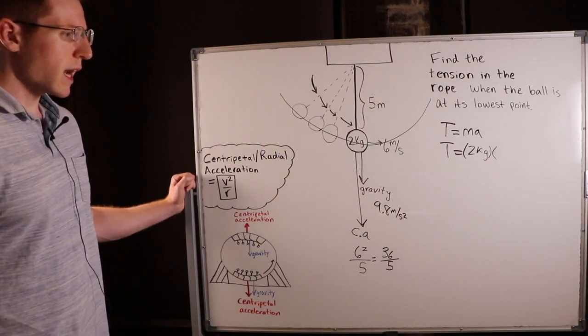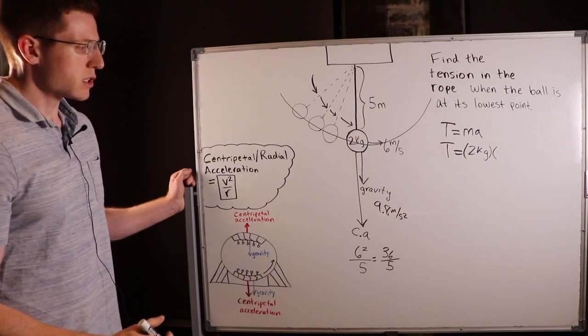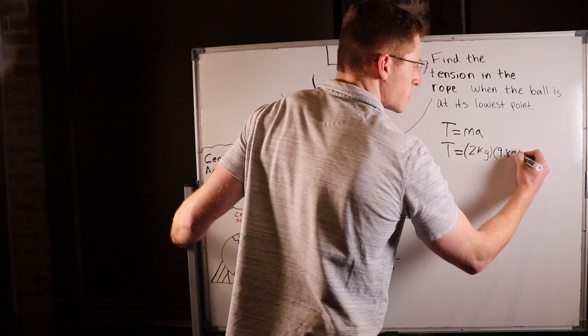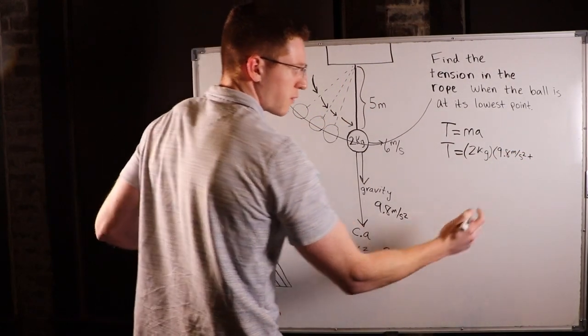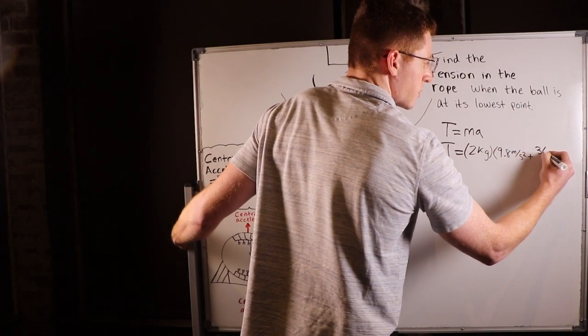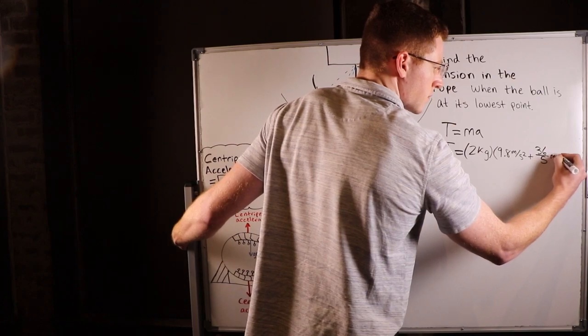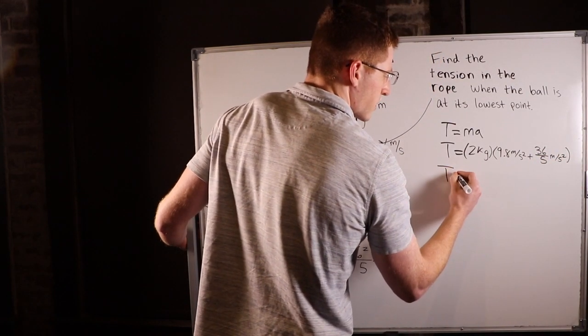So now we can add those in to our acceleration variable here. So I'll add together 9.8 meters per second squared plus 36 over 5 meters per second squared. These are both in units of meters per second squared or acceleration.